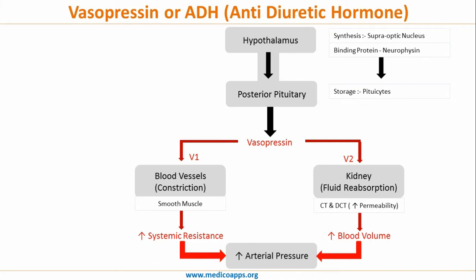Both the increase in systemic resistance and the increase in blood volume lead to an increase in arterial pressure. One important point: the sensitivity of the V2 receptor is much higher than the V1 receptor, so ADH primarily causes fluid reabsorption as compared to an increase in systemic resistance or constriction of blood vessels.